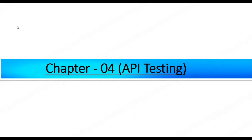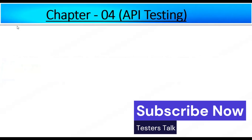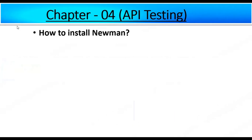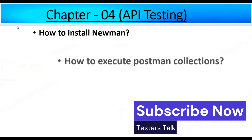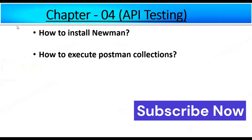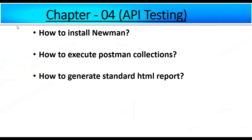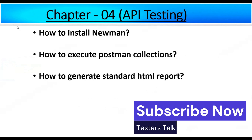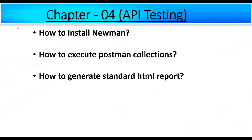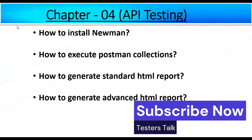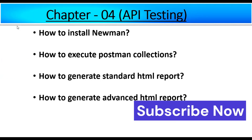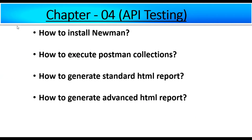In this Chapter 4 of API testing tutorial, I will discuss how to install Newman, how to execute Postman collections from the command prompt, how to generate the standard HTML report, and finally how to generate the advanced HTML report after executing collections from the command prompt.